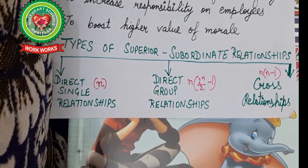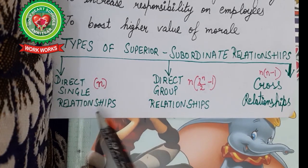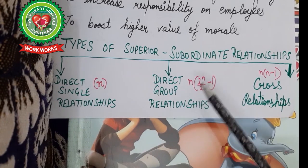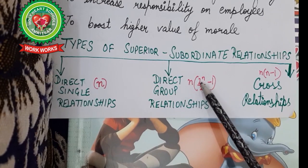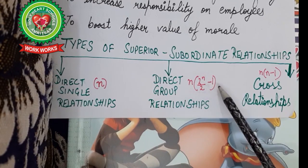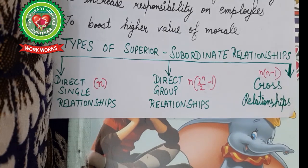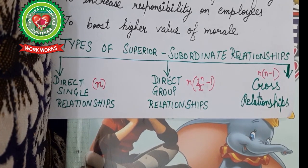According to V.A. Graicunas, there are three types of superior-subordinate relationships. First is direct single relation (when N is 1, nothing additional to calculate). Second is direct group relation, with the formula N × (2^N / 2 − 1). Third is cross relationships, with the formula N × (N − 1). As the number of relationships increases, our formulas also diversify.